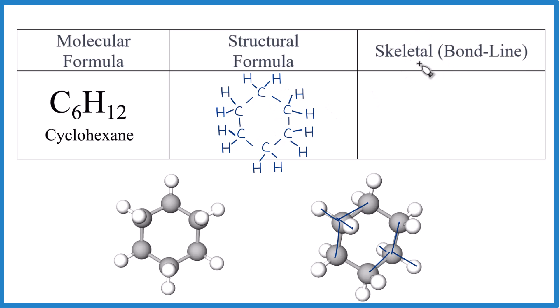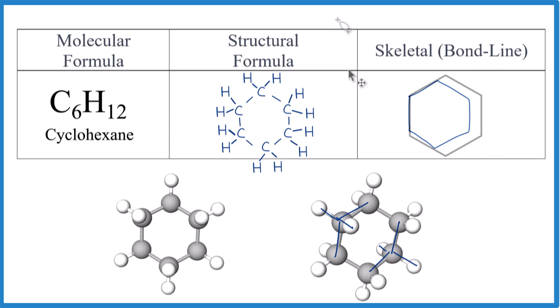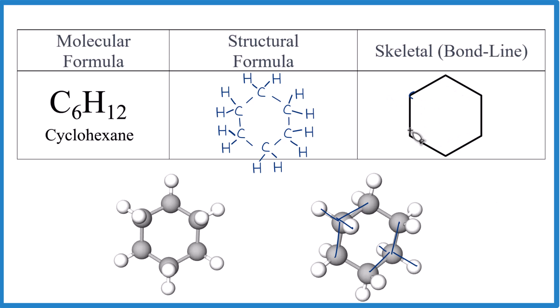If we want to draw the skeletal formula here for cyclohexane, we're going to have our six carbons like this, all single bonded. But we aren't going to draw the carbons or the hydrogens. So if we just take this right there, that's the skeletal or bond line formula for cyclohexane. So we have our six carbons, but we don't draw those in. We just know they're there. And since each carbon forms four bonds, we're going to have two hydrogens here on each carbon. That'll make 12 total. And that's the skeletal formula for cyclohexane, C6H12.